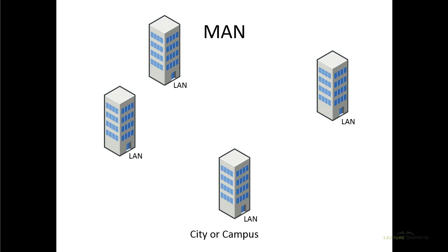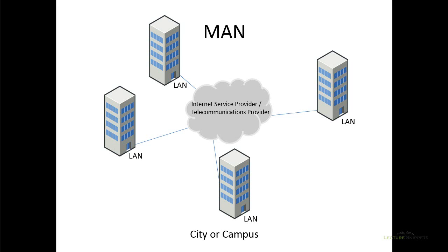In order to make this connection between our networks, we typically have to rely on a third party and use their already established connections or lines. We'll use either an internet service provider or a telecommunications provider to run our data through their lines to another building. Now, on a college campus we may have our own lines run from building to building and have our MAN established there without needing a third party, but for most cases we usually use a third party company.